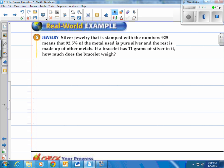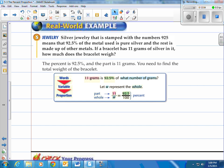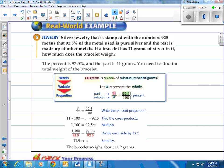Real world example. It says silver jewelry that is stamped with the numbers 925 means that 92.5% of the metal used is pure silver and the rest is made up of other metals. If a bracelet has 11 grams of silver in it, how much does the bracelet weigh? Well, it says the percent is 92.5% and the part is 11 grams. You need to find the total weight of the bracelet. So let's put it into a question: 11 grams is 92.5% of what number of grams? Let W represent the whole, 11 is your part, and then 92.5 is your percent, which is out of 100, and of course they go through the process of cross multiplying and then dividing by 92.5 to get 11.9. So the bracelet weighs about 11.9 grams.